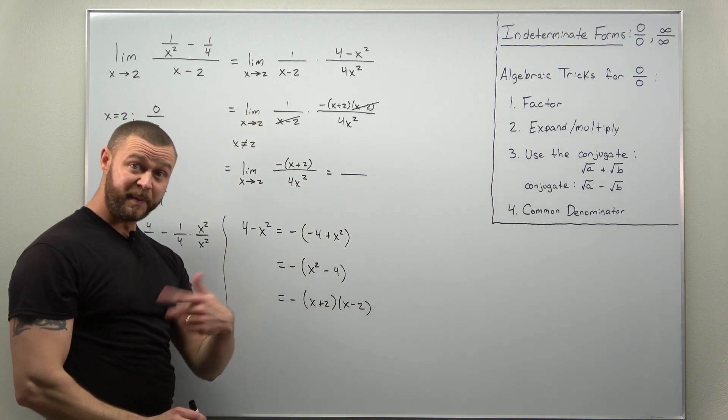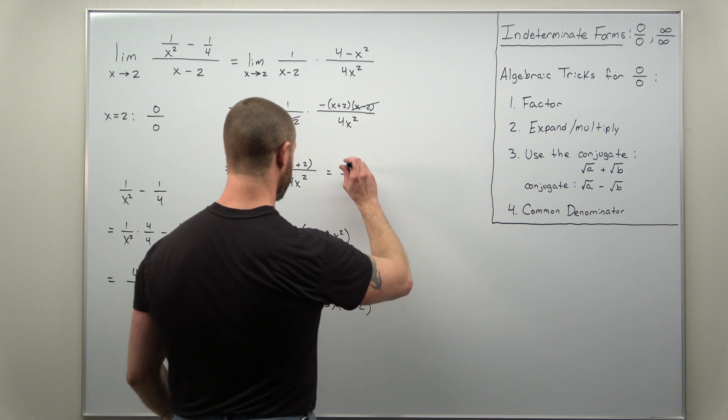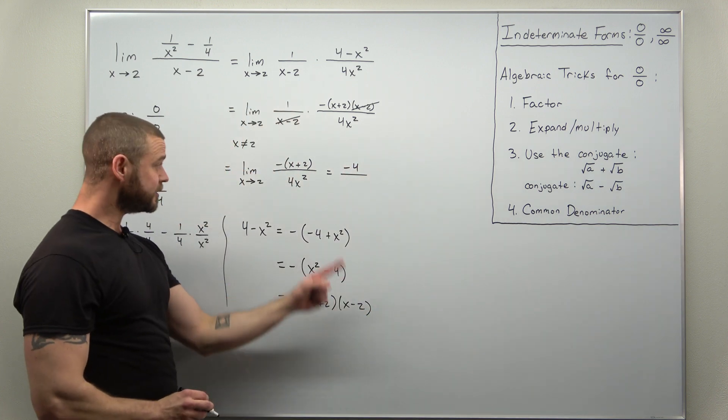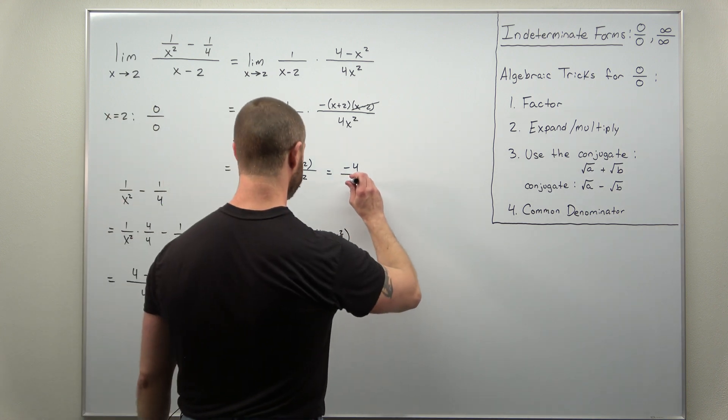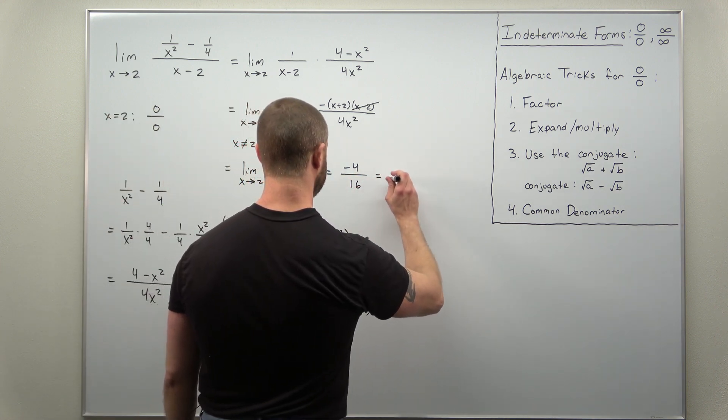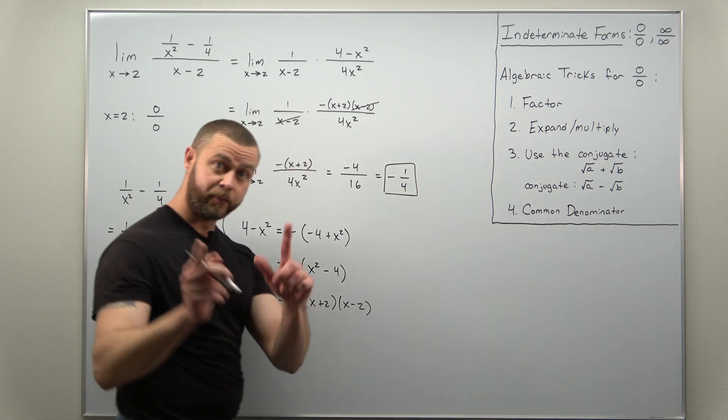And at this point, since there's no more indeterminate form, you can just plug in x as 2. And if we're just careful with the basic math here, looks like we're going to get negative 2 plus 2, so negative 4 in the numerator. And then in your denominator, 2 squared, 4 times 4, 16. Looks like we can cancel that out to get negative 1 fourth for our limit.